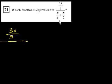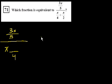The best way to do this is to simplify the denominator first. So that's equal to 3x over 5, all of that over — let's find a common denominator. The common denominator is 4. So x over 4 is x over 4, plus x over 2 is the same thing as 2x over 4.